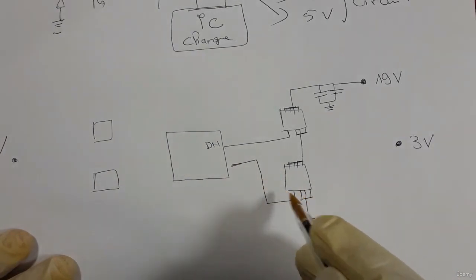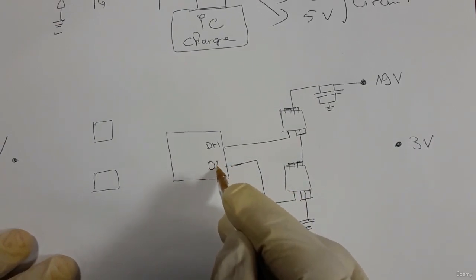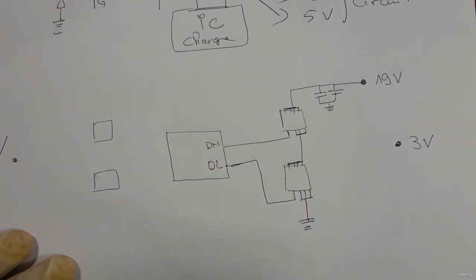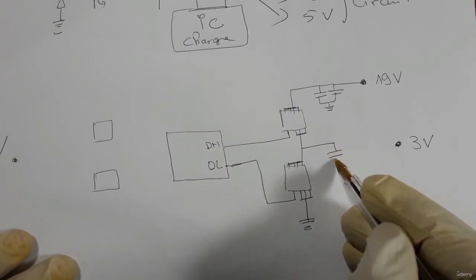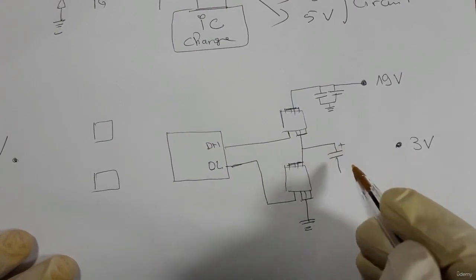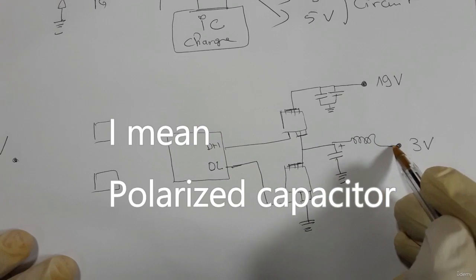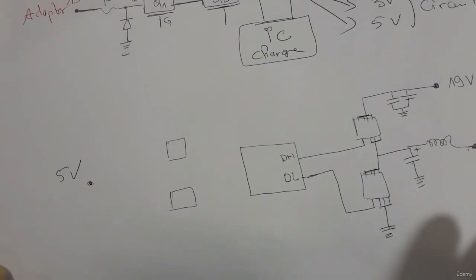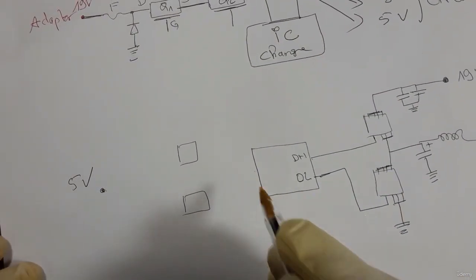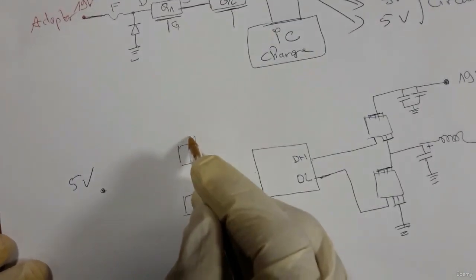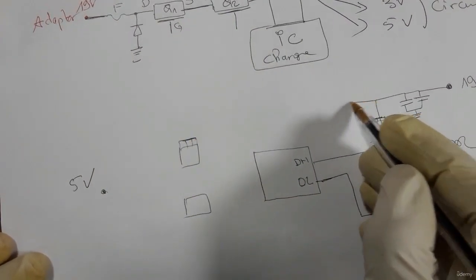The source of the high-side MOSFET connects to the drain of the low-side MOSFET, and the source of the low-side MOSFET connects to ground. The other gate here is the drive-low signal. Then we have a bulk capacitor and a coil, and we get the 3V output.